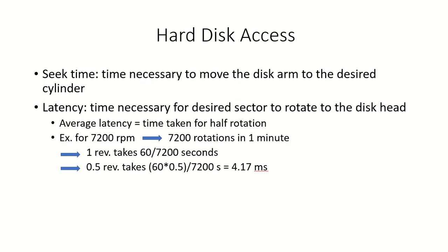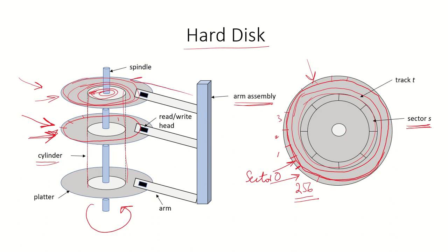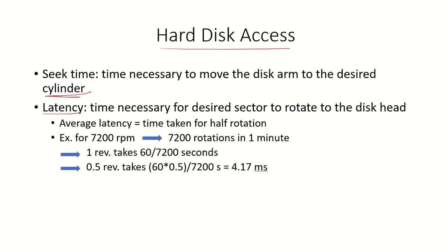How do you access the hard disk? The first thing required is that the disk arm moves to the desired cylinder — that is, the track at a particular radius. The time required to move this disk arm to that particular track is referred to as the seek time. Once the arm is over that track, the spindle rotates to bring the desired sector below the head — this is referred to as rotational latency. The average latency can be considered as the time taken for half a rotation.